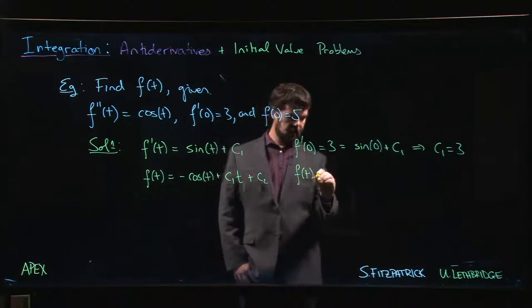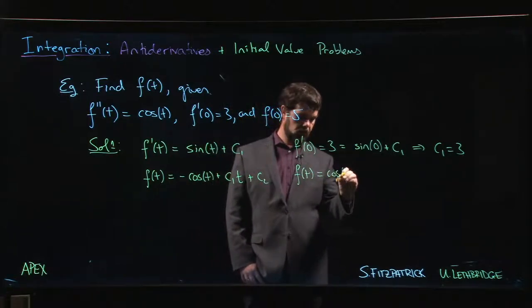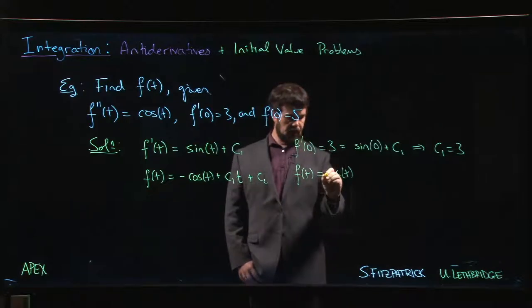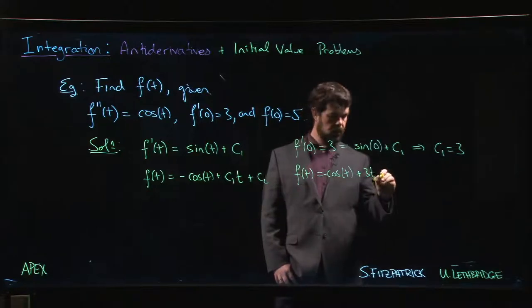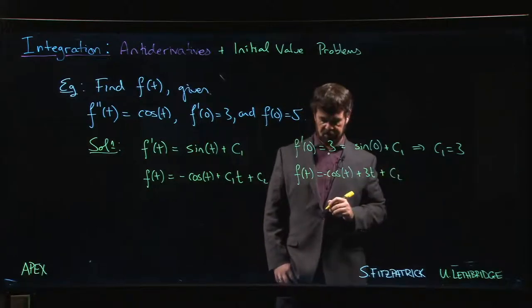I know that f of t is negative cosine of t plus three t, and we still don't know what c2 is.